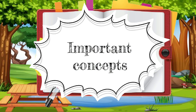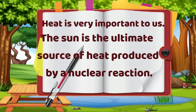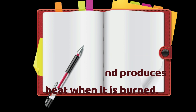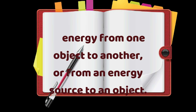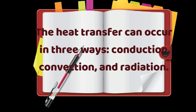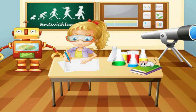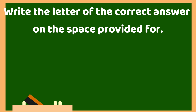Here are the important concepts of today's lesson. Heat is very important to us. The sun is the ultimate source of heat, produced by a nuclear reaction. Another source of heat is burning fuels — fuel is a substance that is combustible and produces heat when burned. Heat is the transfer of energy from one object to another or from an energy source to an object. Heat transfer can occur in three ways: conduction, convection, and radiation. Now that we know the three ways heat is transferred, let us answer the following activities. Are you ready? Let's begin!